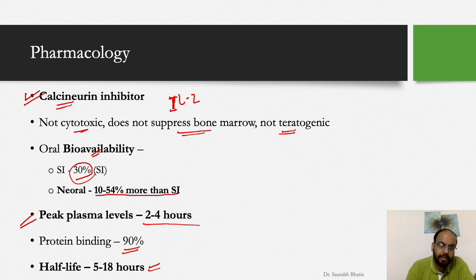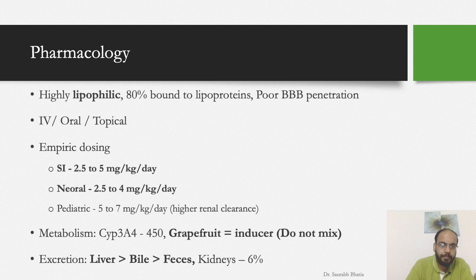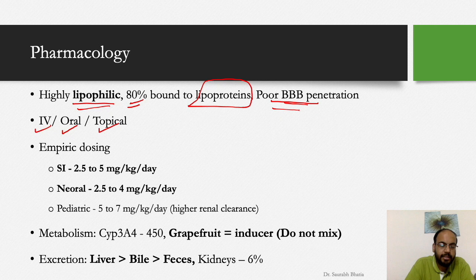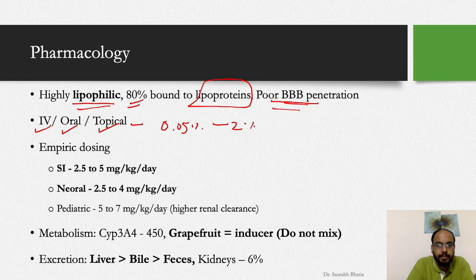Neoral has 10–54% more bioavailability compared to Sandimmune. Cyclosporine is a highly lipophilic molecule — 80% is bound to lipoproteins — with poor blood-brain barrier penetration. It is available as IV, oral, and topical agents. Topical agents are predominantly used in ophthalmology, in percentages ranging from 0.05% to 2%, and studies have shown a good effect of topical cyclosporine eye ointment in patients with Stevens-Johnson Syndrome to mitigate eye damage.